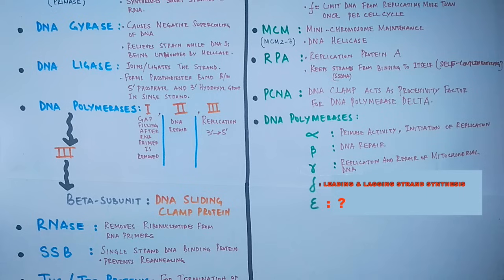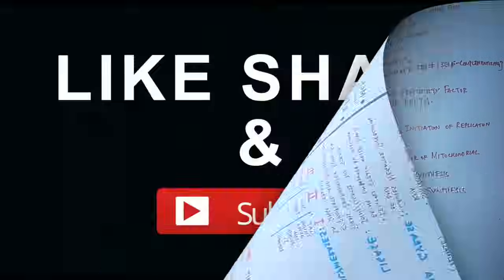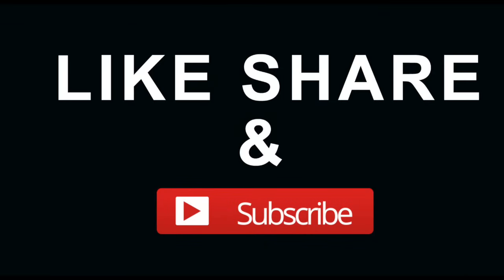Epsilon polymerase still has an unknown and ambiguous role. We also have DNA topoisomerases in eukaryotes, which help in unwinding by negative supercoiling. These are all the essential enzymes and proteins involved in the DNA replication process of prokaryotes and eukaryotes.